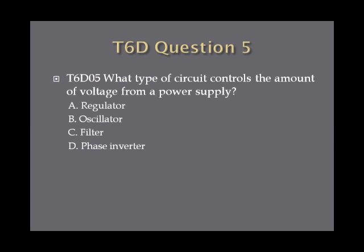Question 5. What type of circuit controls the amount of voltage from a power supply? A. Regulator, B. Oscillator, C. Filter, or D. Phase Inverter?